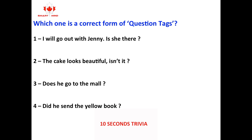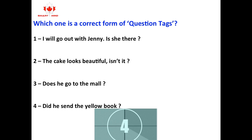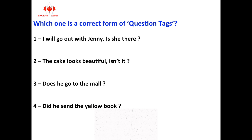Which one is the correct form of question tags? One: I will go out with Jenny, is she there? Two: The cake looks beautiful, isn't it? Three: Does he go to the mall? Four: Did he send a yellow book?